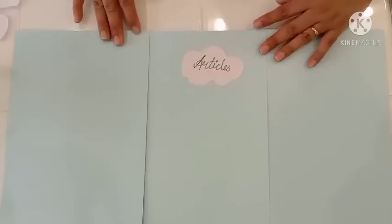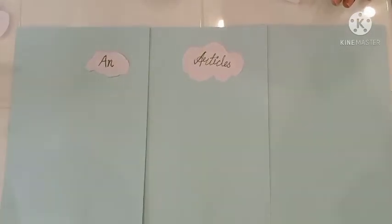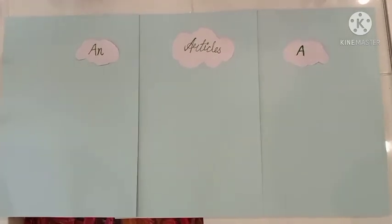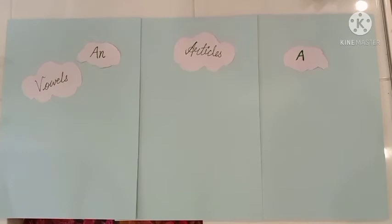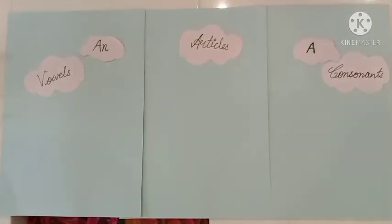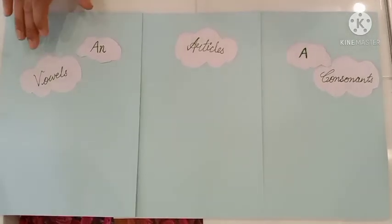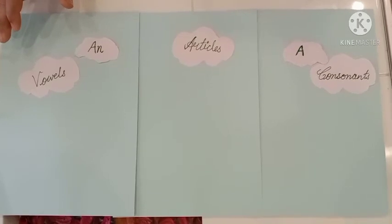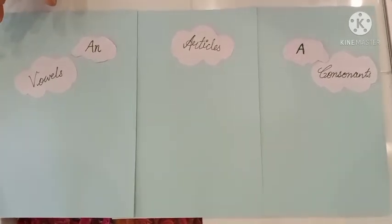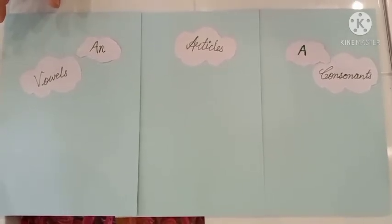Let's do the activity. Children, today I am going to tell you a story about articles. You have to listen very carefully. Now see — this is our articles chart. We have two articles. 'An' is used with vowels and 'a' is used with consonants. In English we have 26 alphabets — letters A, E, I, O, U; these five letters are vowels, and the rest 21 are consonants.